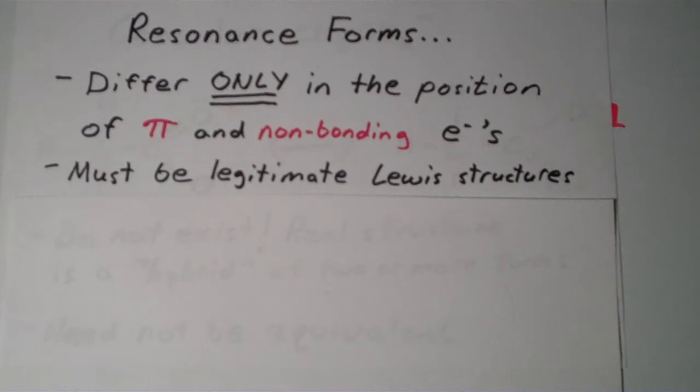Secondly, resonance forms must be legitimate Lewis structures. So what do I mean by that? Well, that just means you can't have a carbon with five bonds on it or an oxygen with seven bonds on it or whatever.